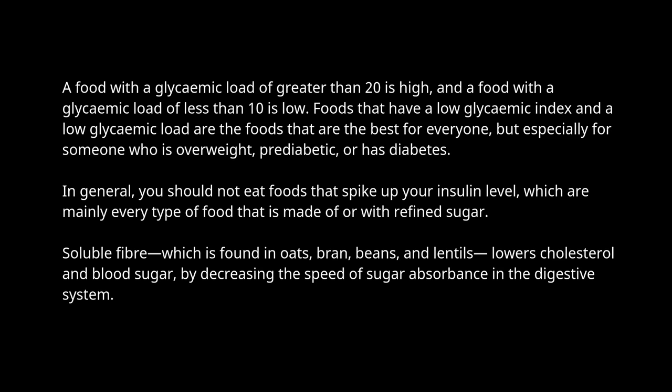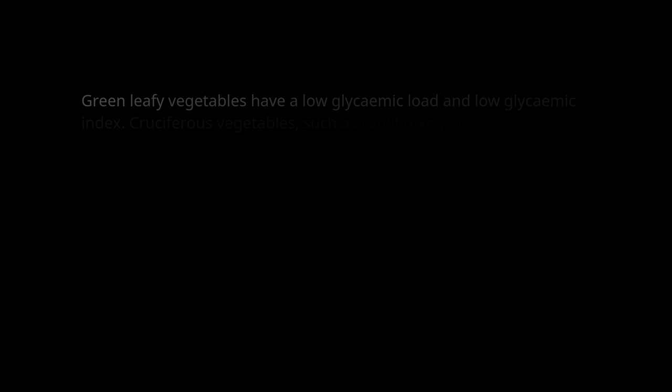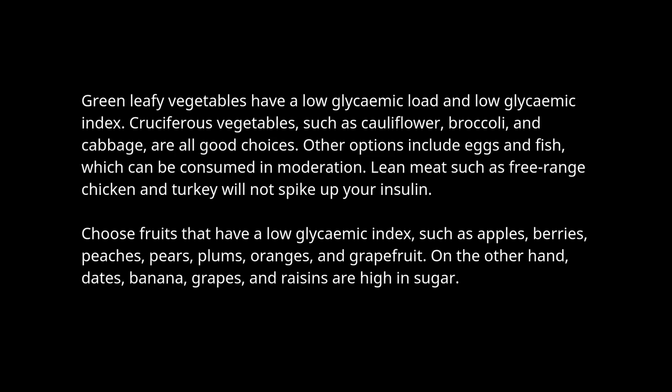In general, you should not eat foods that spike up your insulin level, which are mainly every type of food made of or with refined sugar. Soluble fiber, found in oats, bran, beans, and lentils, lowers cholesterol and blood sugar by decreasing the speed of sugar absorbance in the digestive system. Green leafy vegetables have a low glycemic load and low glycemic index. Cruciferous vegetables such as cauliflower, broccoli, and cabbage are all good choices. Other options include eggs and fish, which can be consumed in moderation.